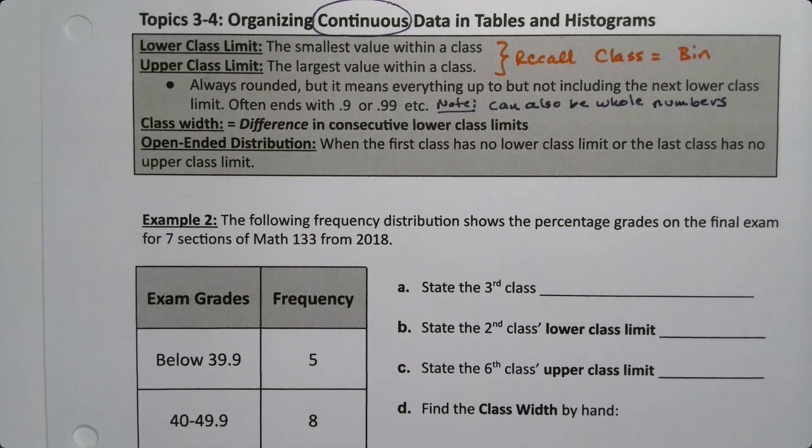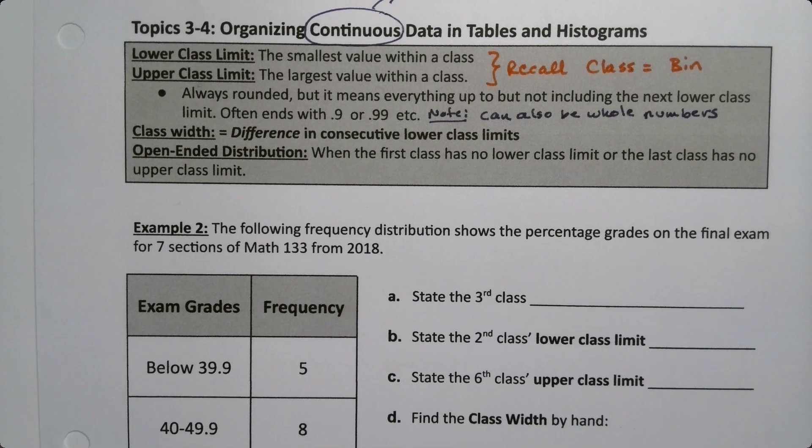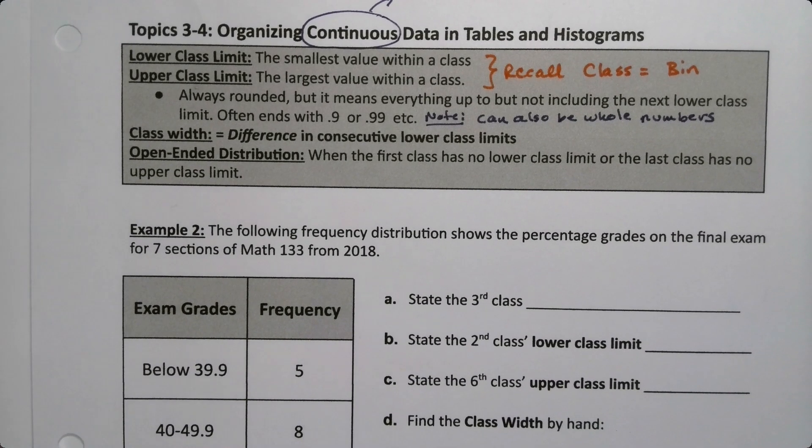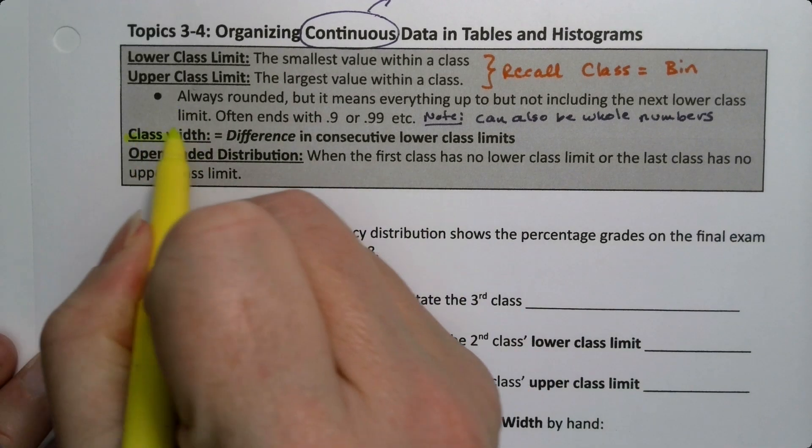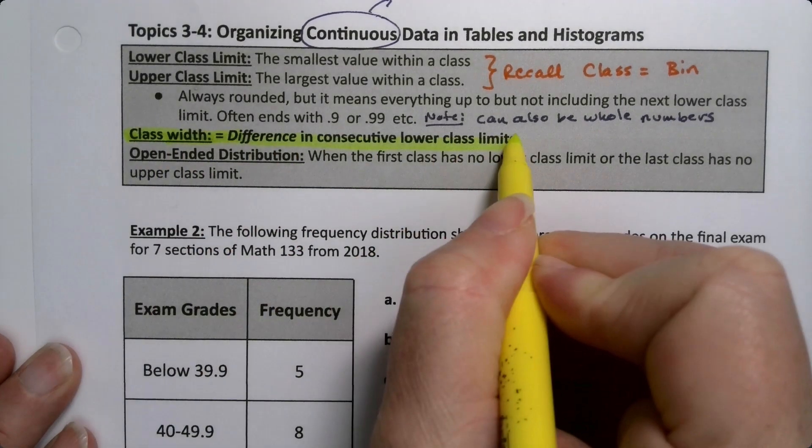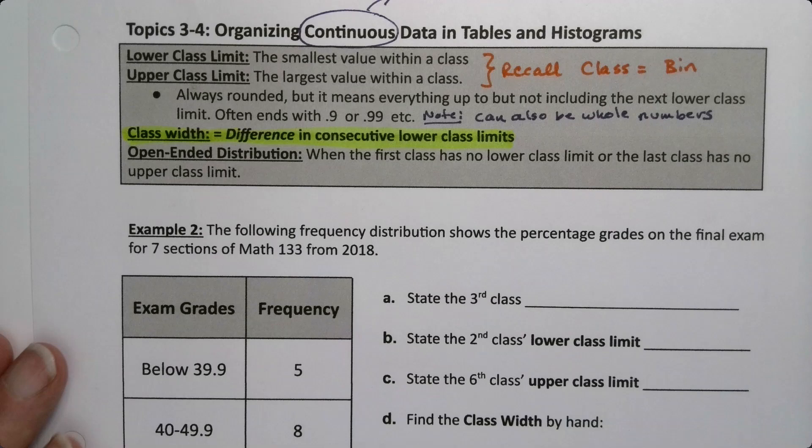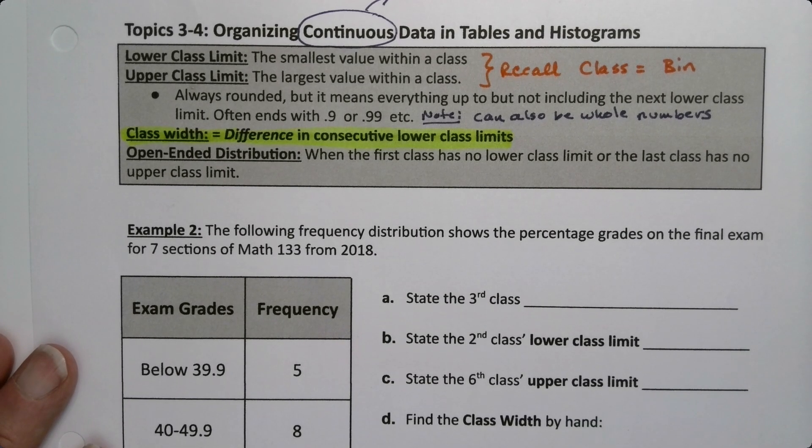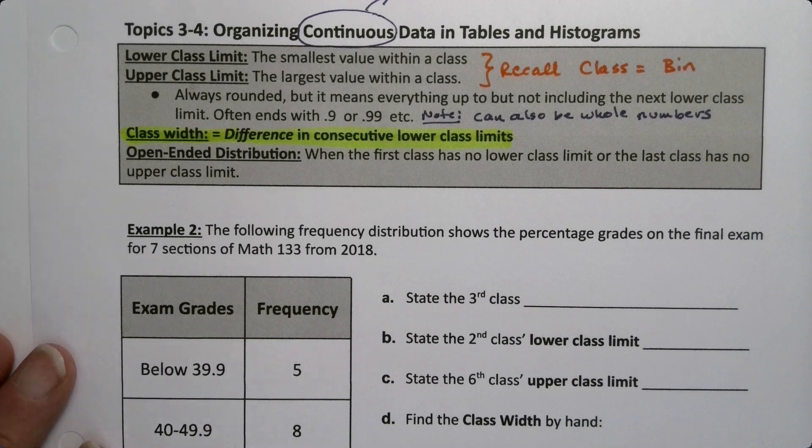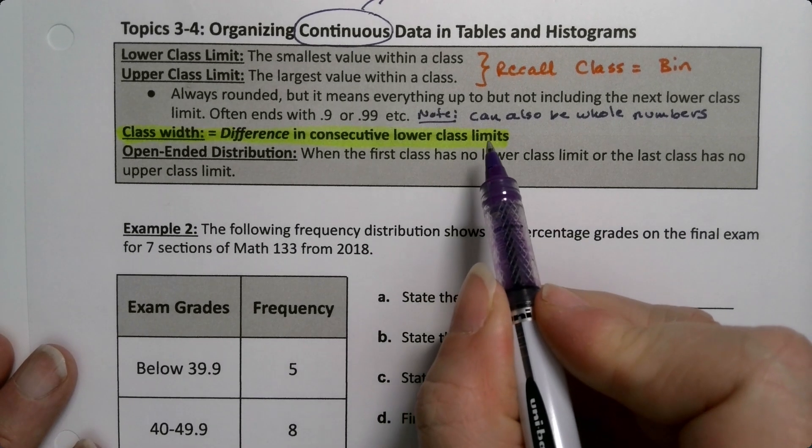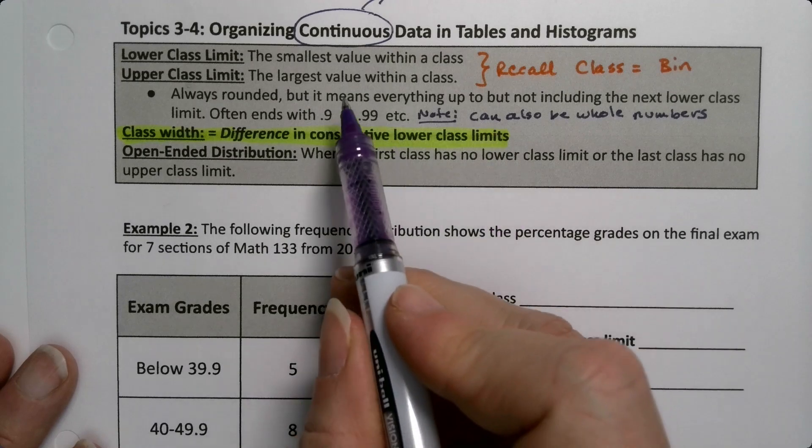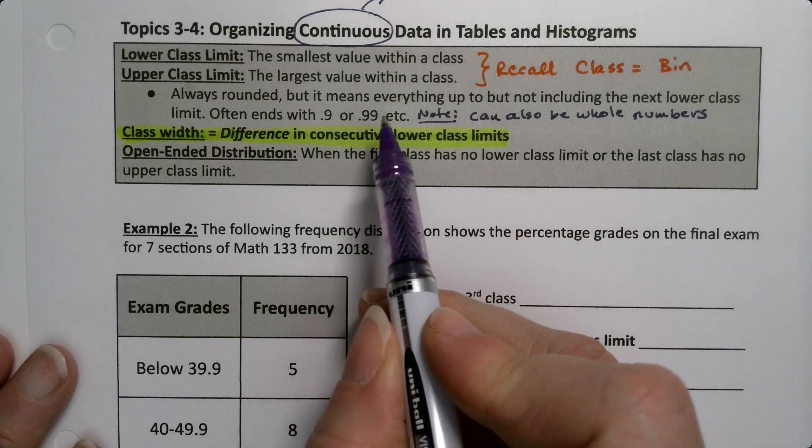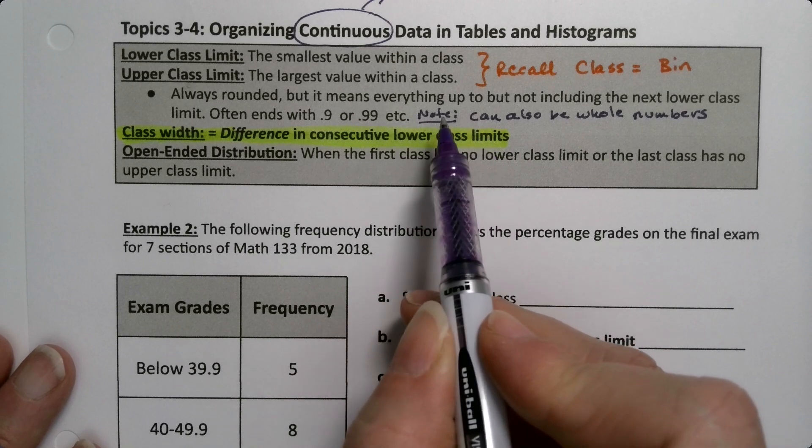Next, the class width. The class width is one of the things that students do incorrectly a lot of the time, so you want to make sure you highlight and put this definition on your note sheet. It's the difference in consecutive lower class limits. So it's how far apart your lower class limits would be because the upper class limit is really going on to 0.99999 forever. You can't use that.